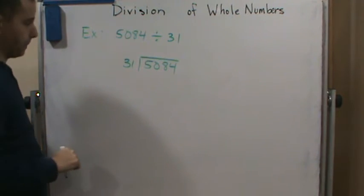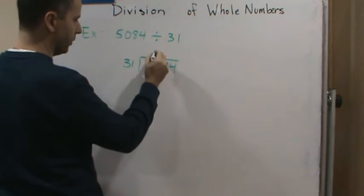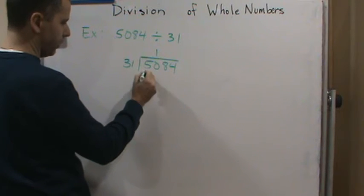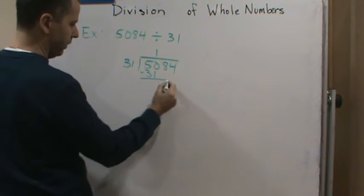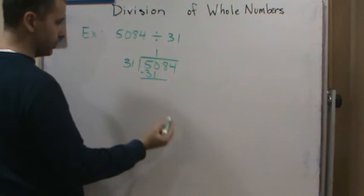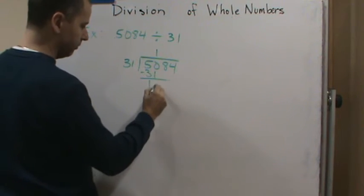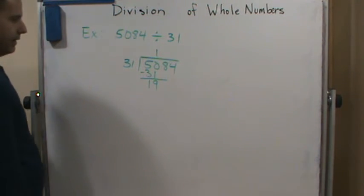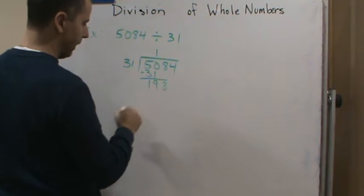So 31 goes into 50 one time. So 31 times 1 is 31, and now I'm going to subtract, which gives me 19. And then I'm going to drop down the 8.